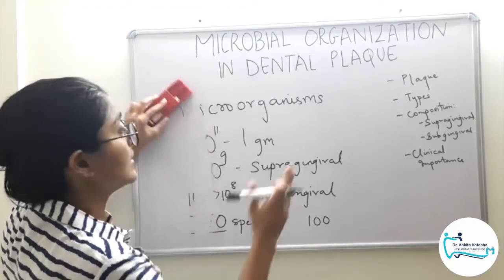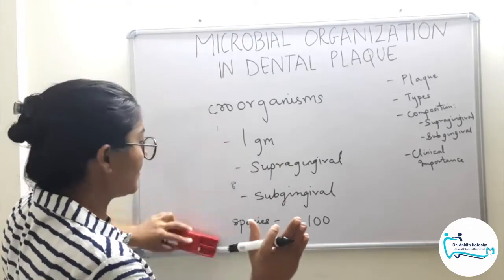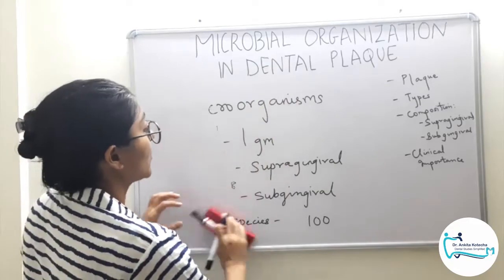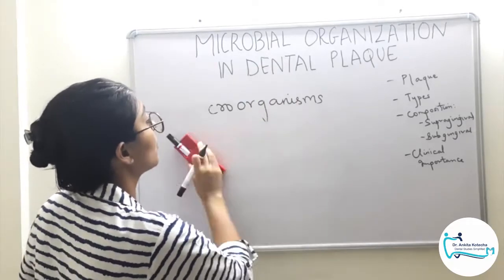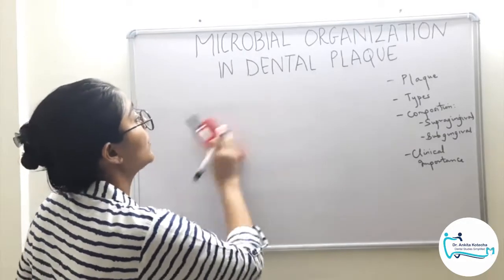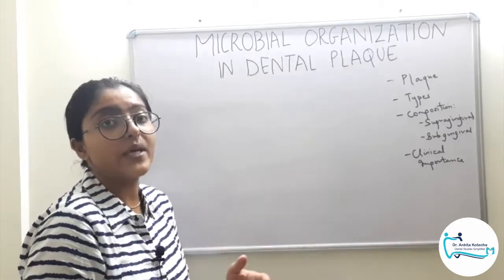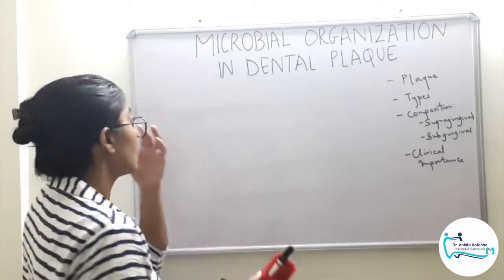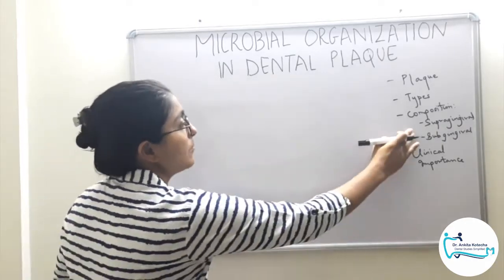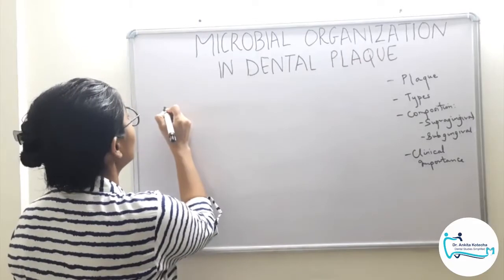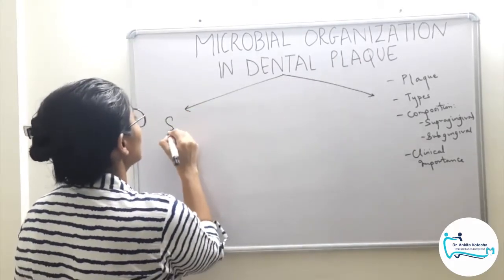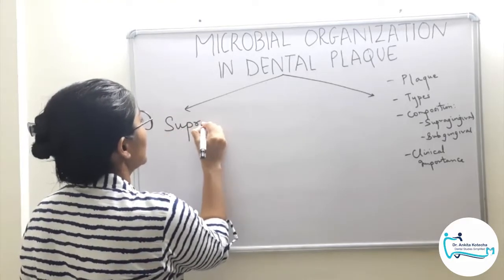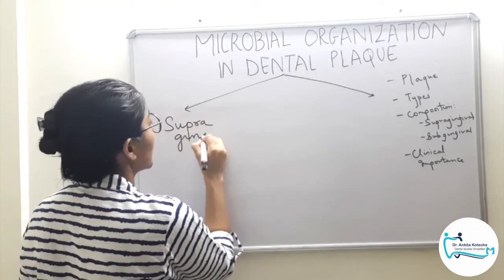Now talking about the types of dental plaque — just a brief summary, as the main topic here is microbial organization. Do let me know in the comment section if you want me to discuss dental plaque or biofilm-related subtopics. Plaque is mainly classified into two types based on its location in relation to the gingival margin: supragingival and subgingival.